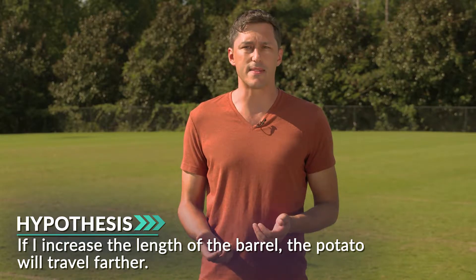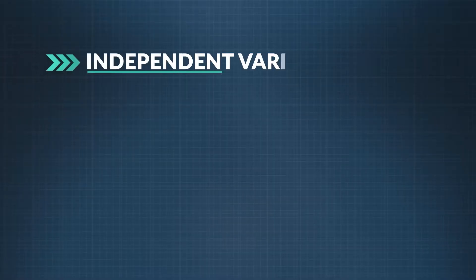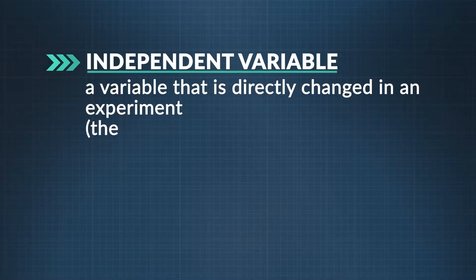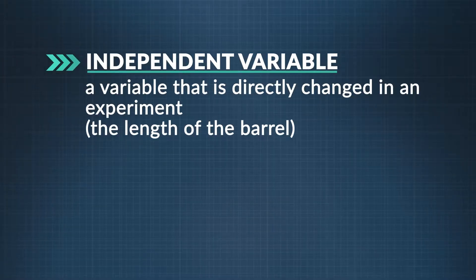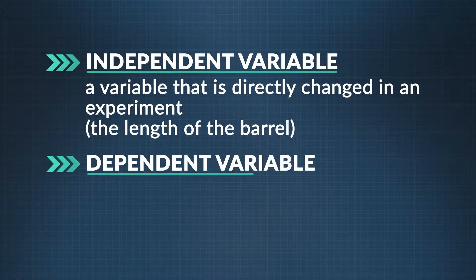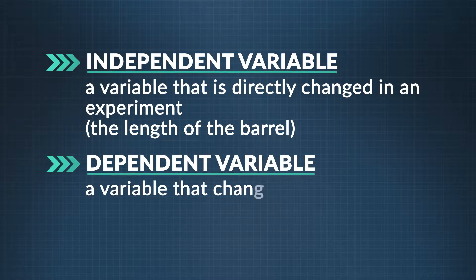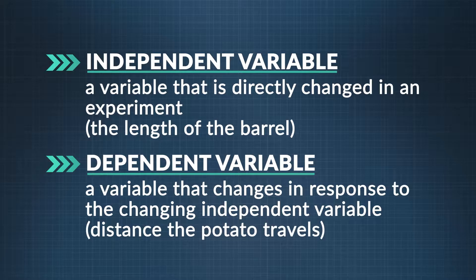In the scientific method, you can change only one thing at a time, so that you are sure what is causing the outcome. You call that change in an experiment the independent variable. In our case, it's the length of the barrel. The dependent variable changes in response to the changing independent variable. For us, that's the distance the potato travels.